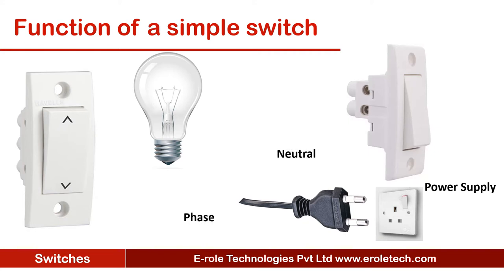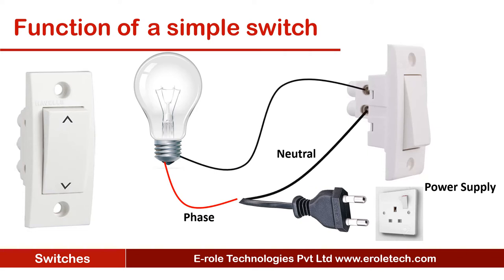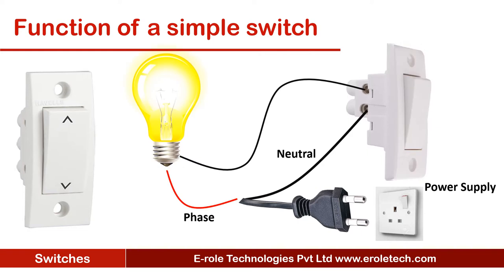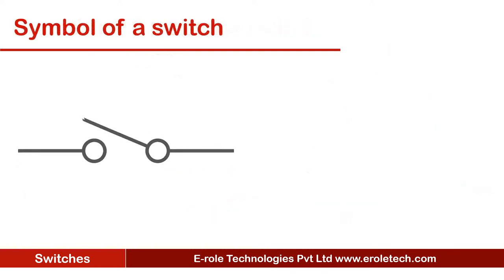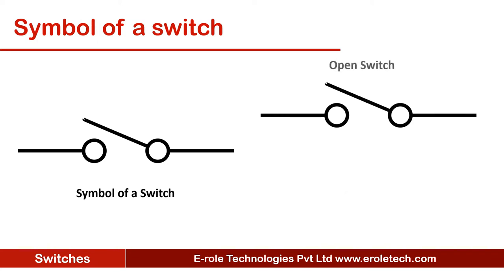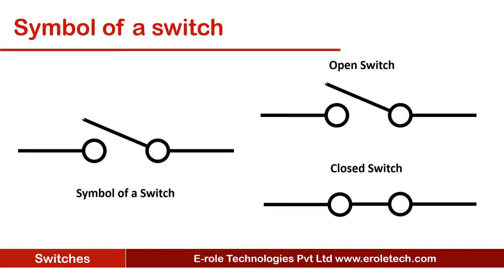To control an electrical appliance using a switch, we connect one electrical wire directly to the appliance and the other wire to the appliance through the switch. When the switch is pushed downward, the appliance turns on, and the device stops as soon as the switch is pushed upward. This is the symbol of an on/off switch — this symbol shows the open switch position and this symbol shows the closed switch position.